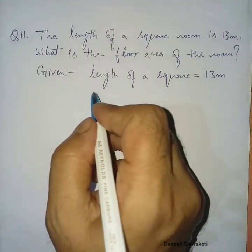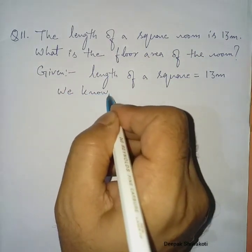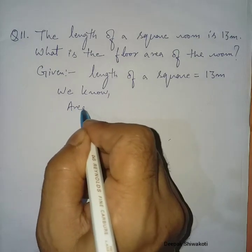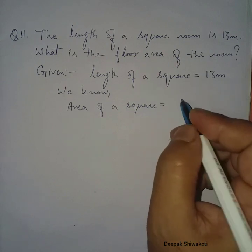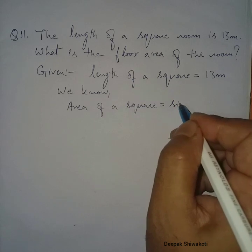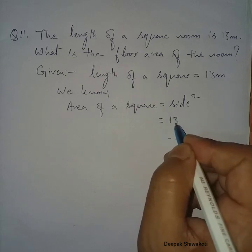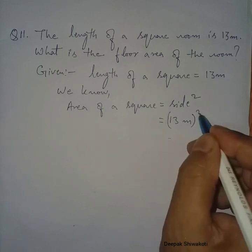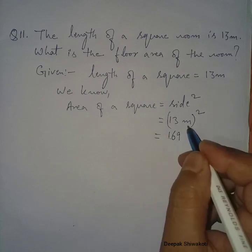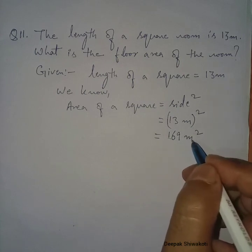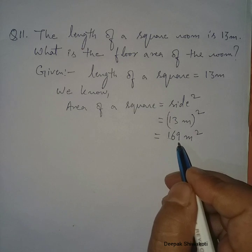The unit is meters. We know the formula to find the area of a square: area of a square is equal to side squared. Side is 13 meters, so 13 into 13 is 169, and the unit of area is meter square. So the area of the floor is 169 meter square.